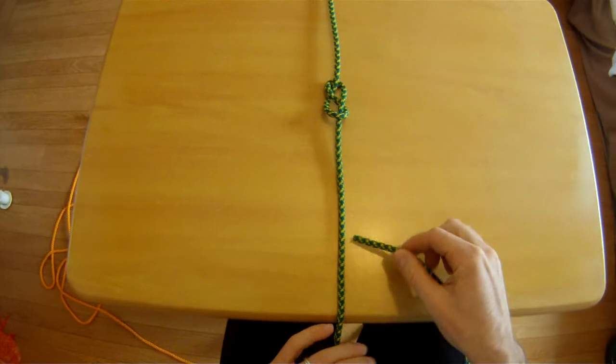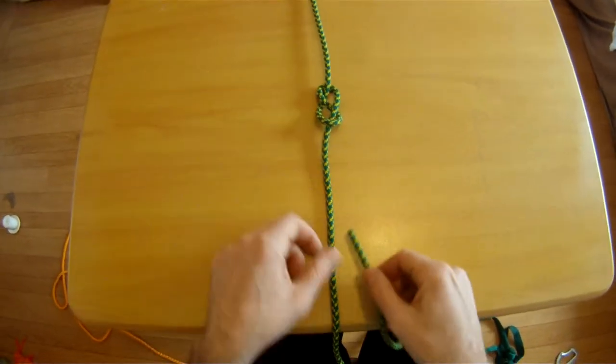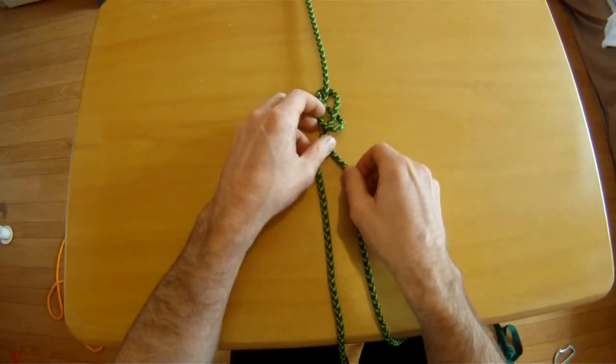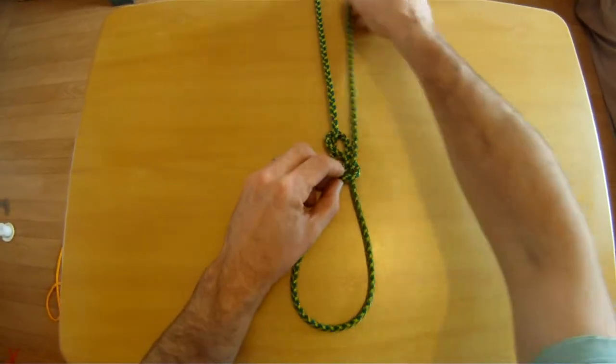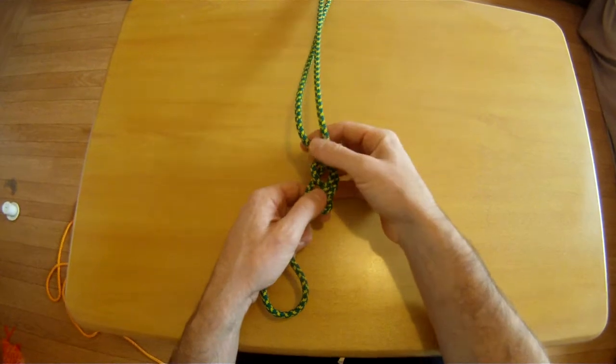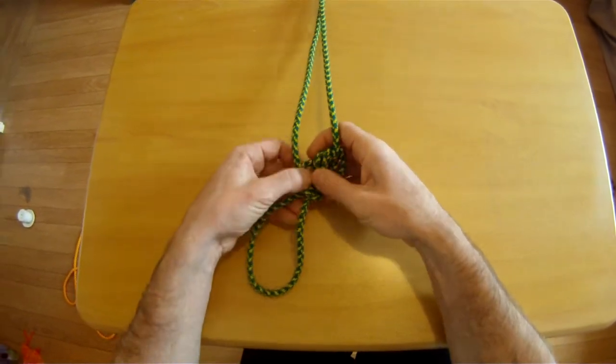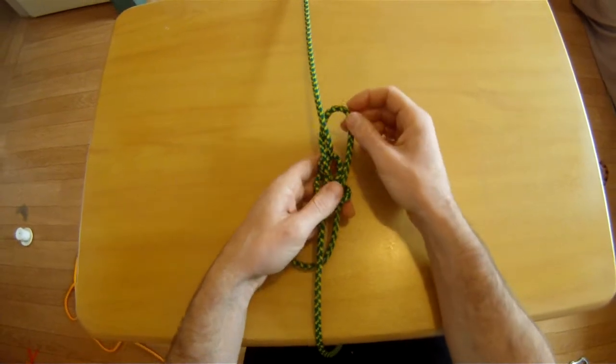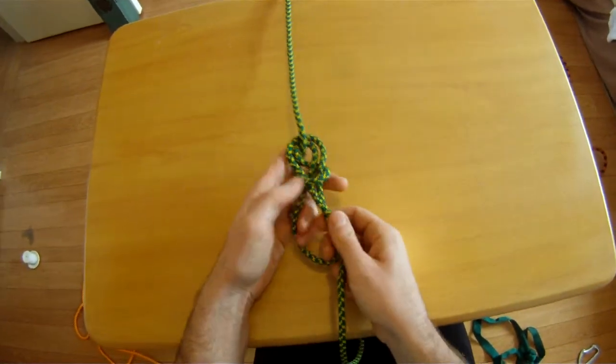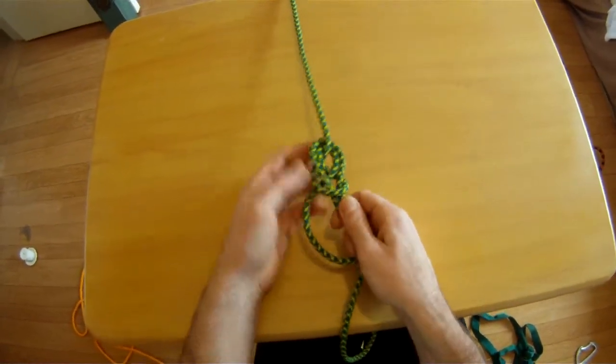Now, we are not retracing the knot, but what we're doing is we're going up through the bottom loop, around the top rope, and then back through the bottom loop. So, here you can see we've looped through the bottom, around the top, and back through the bottom again.